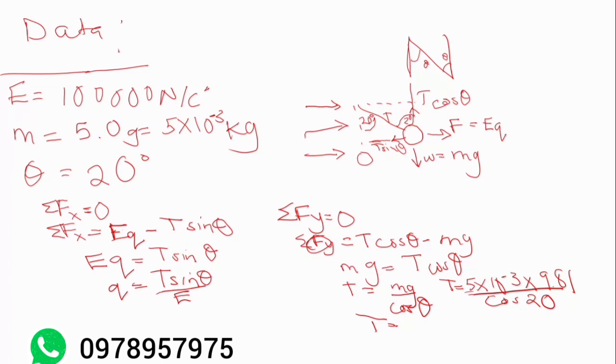Let me just get my calculator and punch it in. So we have 5 exponent negative 3 multiplied by 9.81, which is 0.04905. Then we divide this by cosine 20. It's giving us 0.052197919.